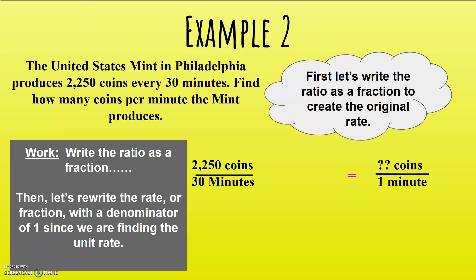Our first rate is 2,250 coins over 30 minutes. That's a rate. It has two separate units. One of the units is number of coins. The other unit is number of minutes.